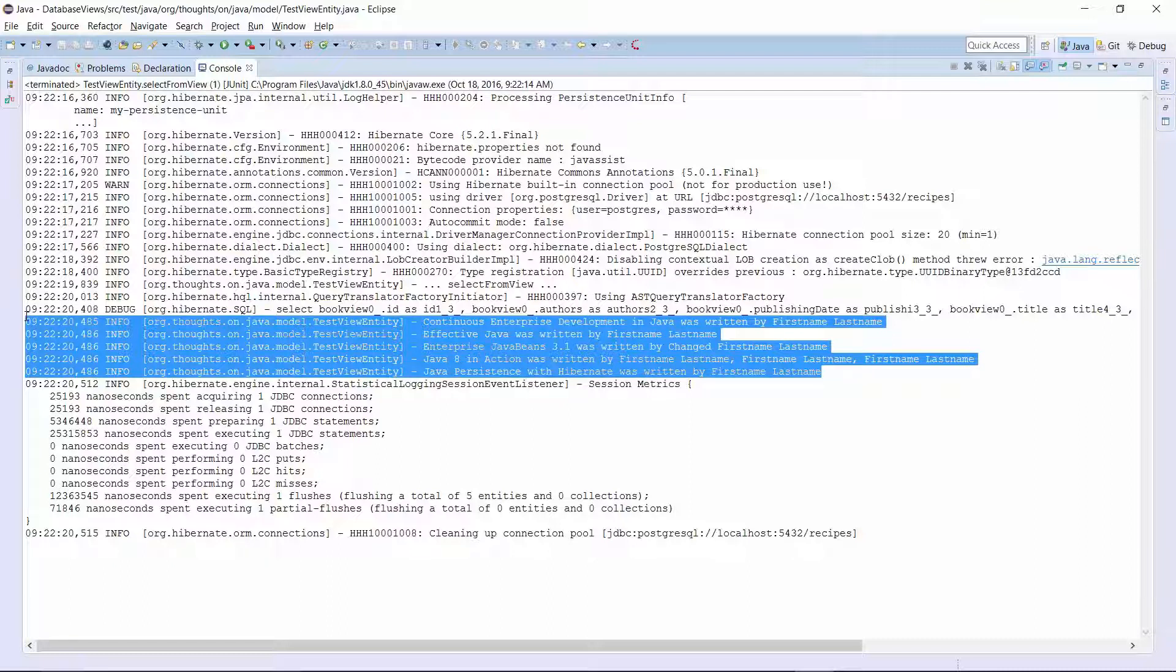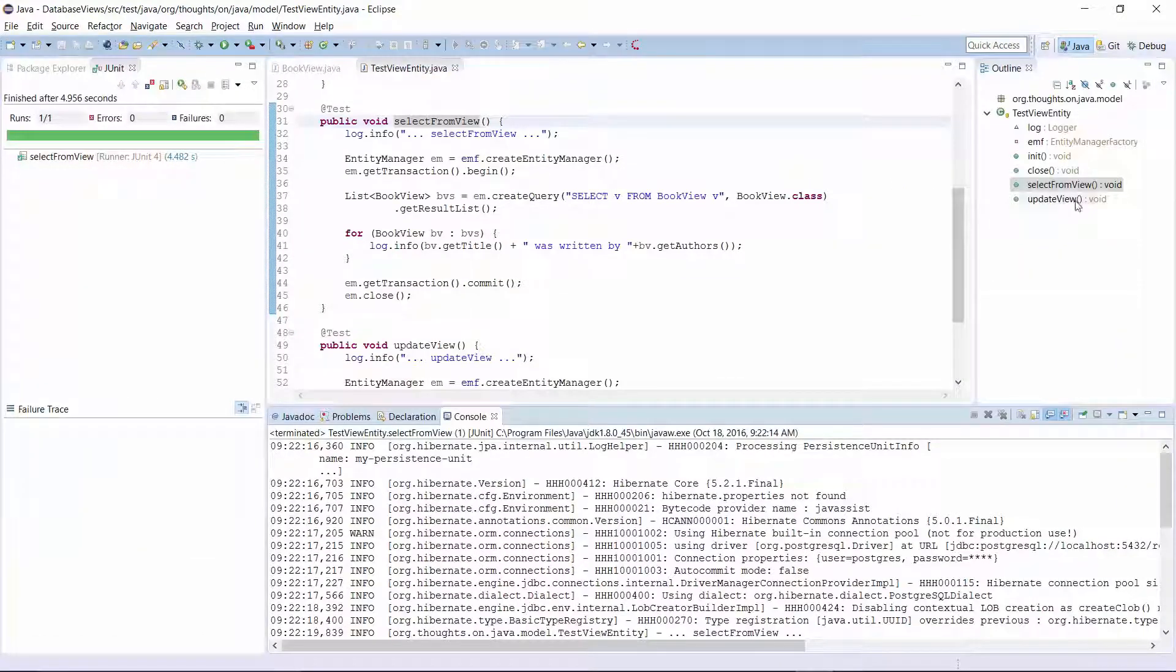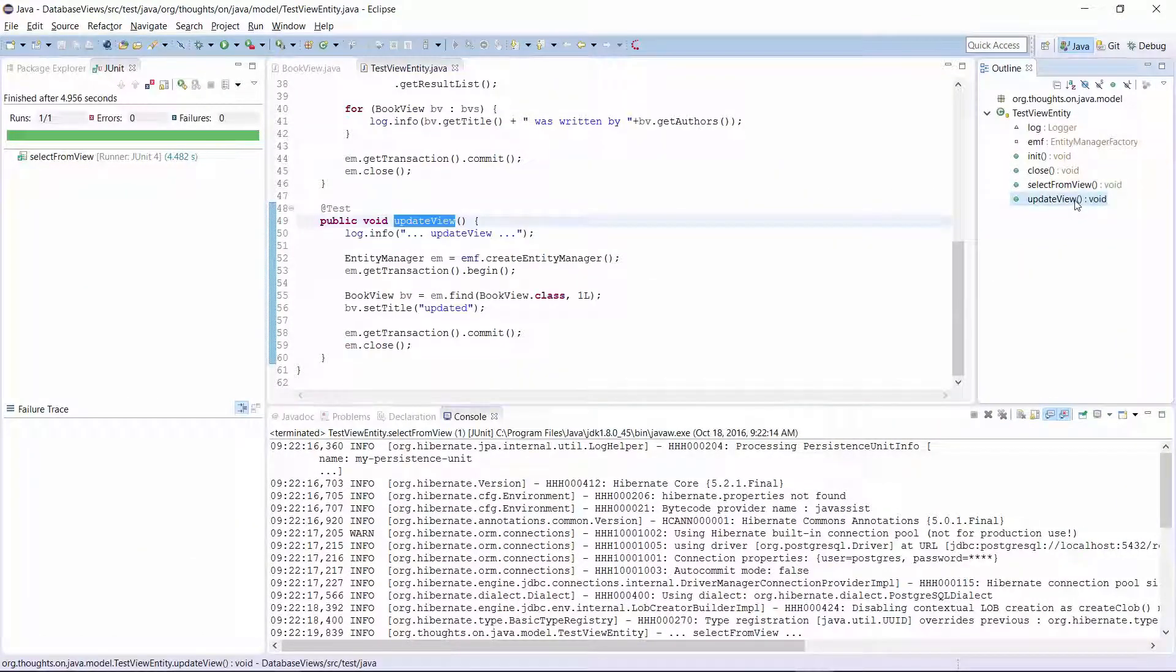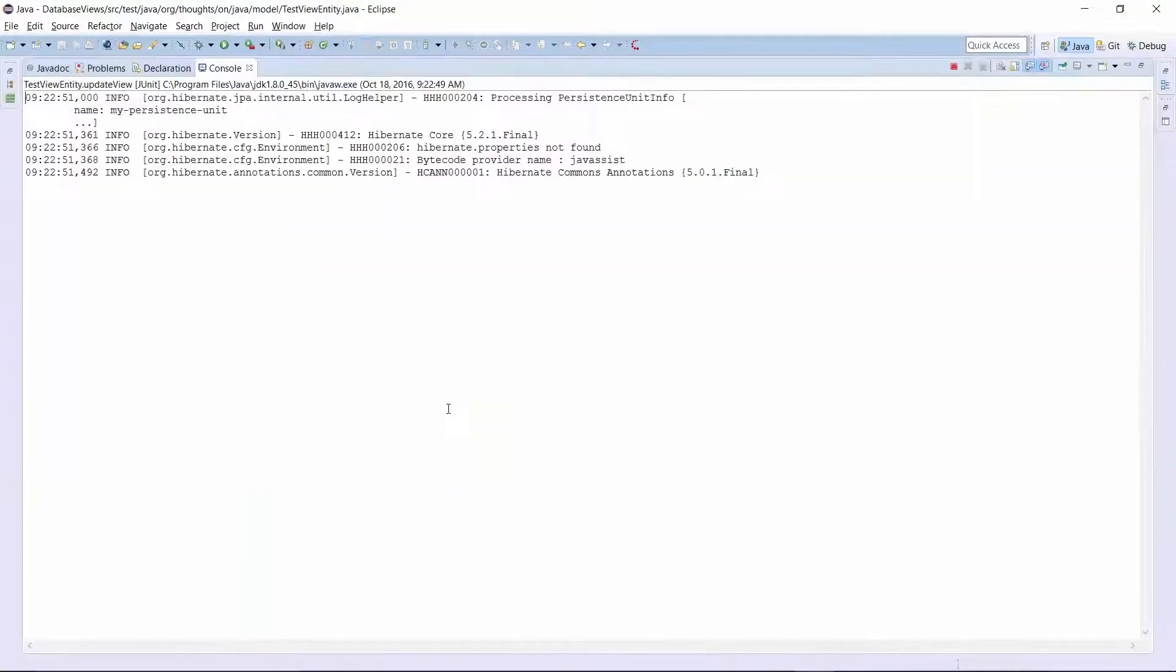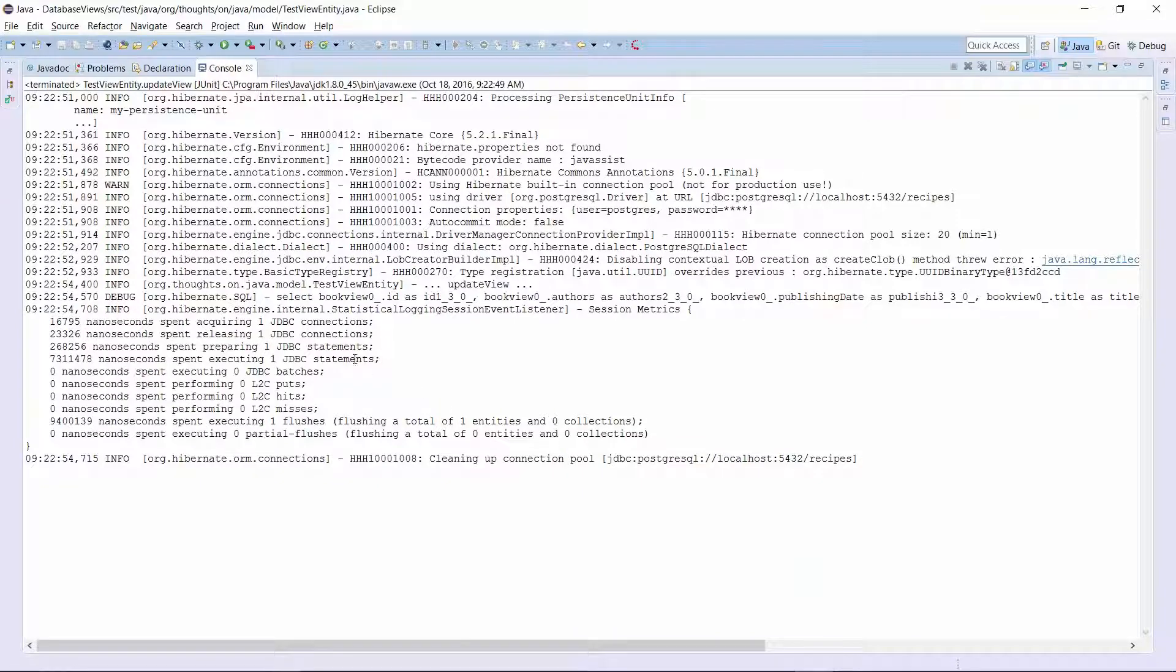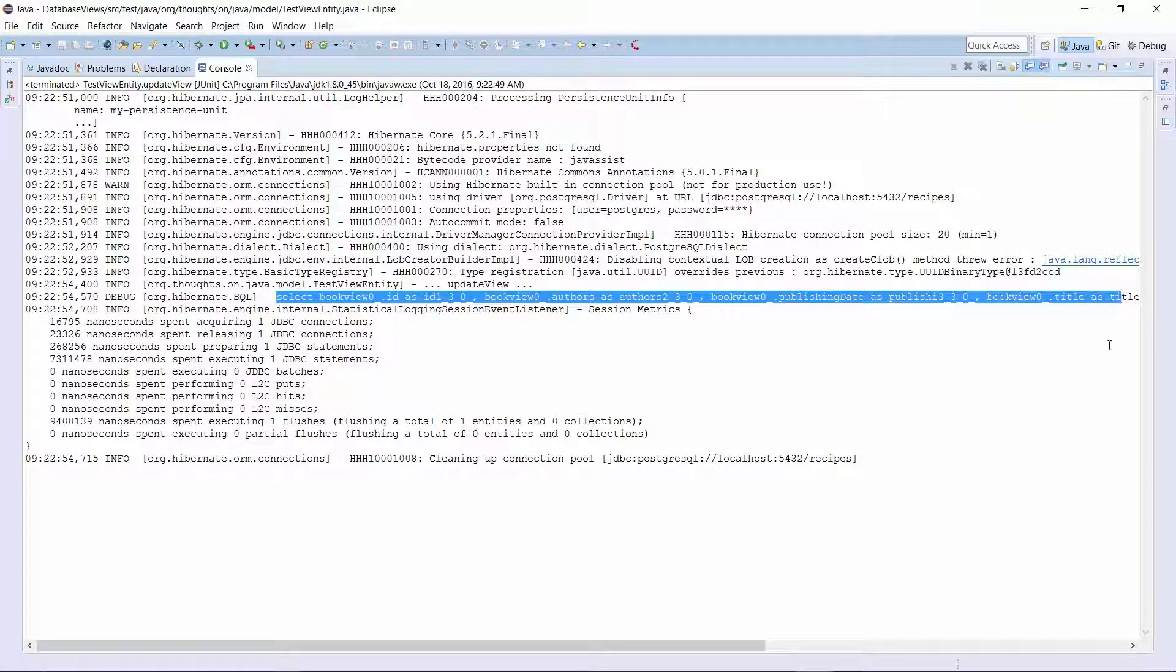I annotated the BookView entity with Immutable and Hibernate will therefore ignore all update operations on it. Here you can see a simple test case that tries to change the title of a BookView entity with ID 1. Let's run this test and see how Hibernate handles it. Here you can see the select statement that Hibernate used to get the BookView entity with ID 1. This is the only database interaction Hibernate performed. It ignored the changed title attribute and didn't execute an SQL update statement for it.